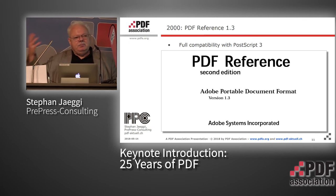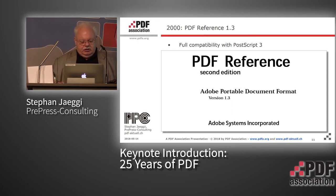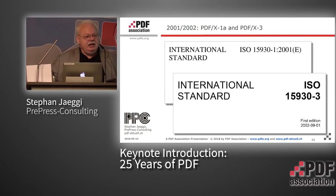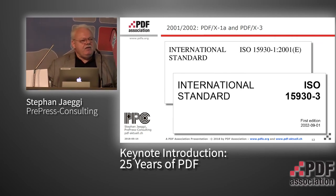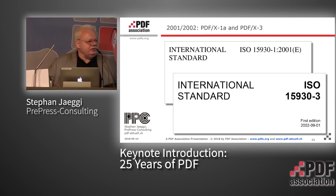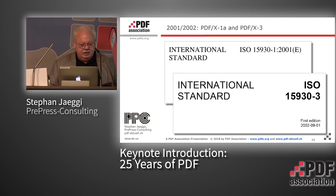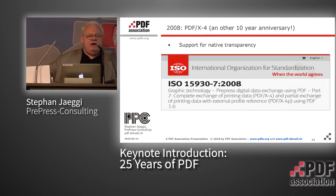PDF 1.3 could be converted to PostScript 3 without any loss, which was quite good. That was also the base of the first ISO standards based on PDF: PDF/X-1a and PDF/X-3, which took care of other issues we mentioned in our white paper — like the page bounding box, page geometry boxes, and trapping keys. These things were first defined at the ISO level and later picked up by Adobe in PDF 1.4.